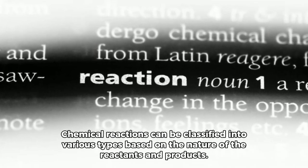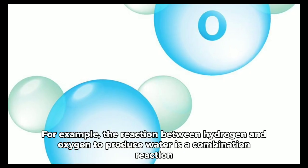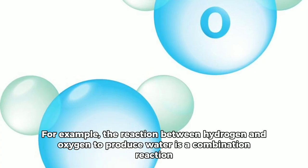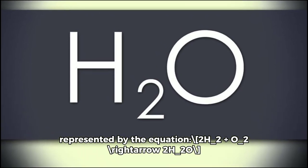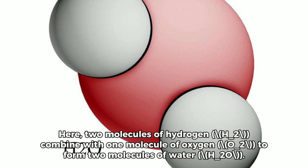Chemical reactions can be classified into various types based on the nature of the reactants and products. One common classification is the combination reaction, where two or more substances combine to form a new compound. For example, the reaction between hydrogen and oxygen to produce water is a combination reaction. Here, two molecules of hydrogen (H₂) combine with one molecule of oxygen (O₂) to form two molecules of water (H₂O).